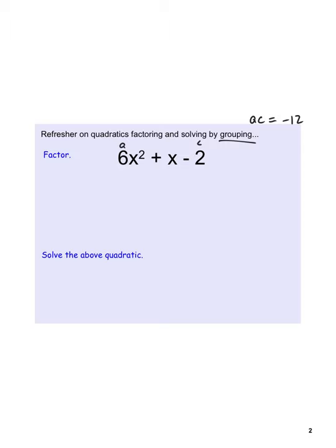When you think about the factors of 12, we've got 1, 12, 2, 6, and 3. We take these factors and want two that add up to positive 1. You can see if we use positive 4 and negative 3, their product is negative 12 and they add up to positive 1.